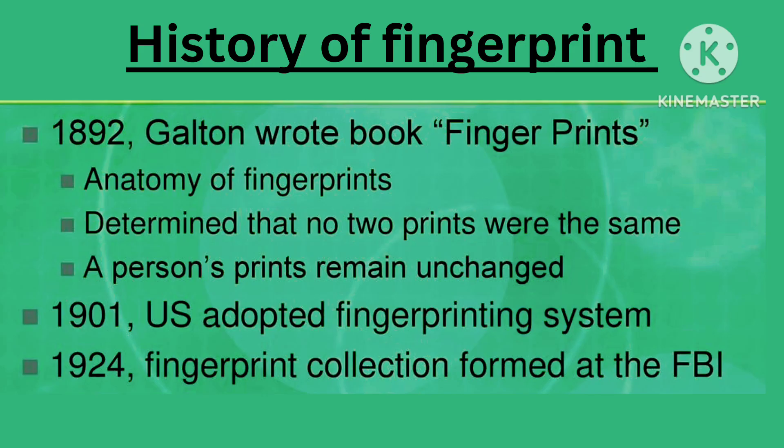History of Fingerprint. In 1892, Galton wrote the book Fingerprints, and through the anatomy of fingerprints, determined that no two prints were the same, and that a person's prints remain unchanged. In 1901, the US adopted a fingerprinting system. In 1924, a fingerprint collection was formed at the FBI.